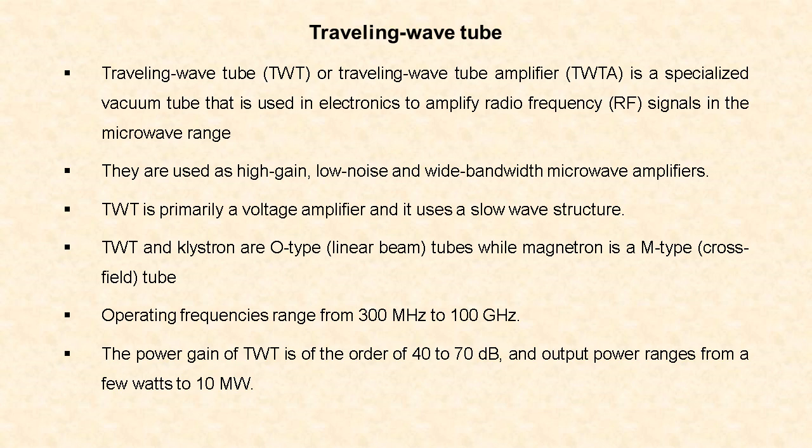Traveling wave tube, or traveling wave tube amplifier, is a specialized vacuum tube that is used in electronics to amplify radio frequency signals which are in the microwave range. Traveling wave tubes are used as high gain, low noise and wide bandwidth microwave amplifiers. It is primarily a voltage amplifier and uses a slow wave structure, which may be a helix or coil.